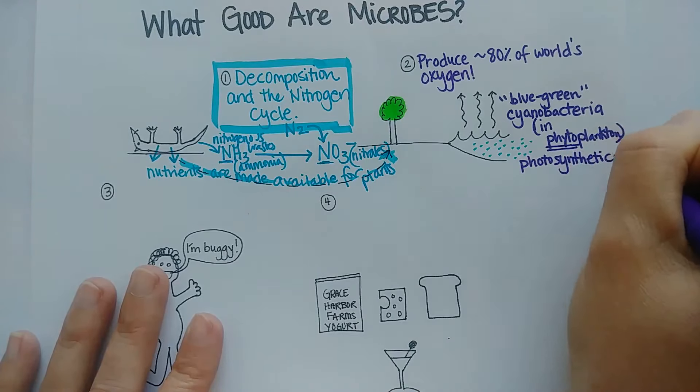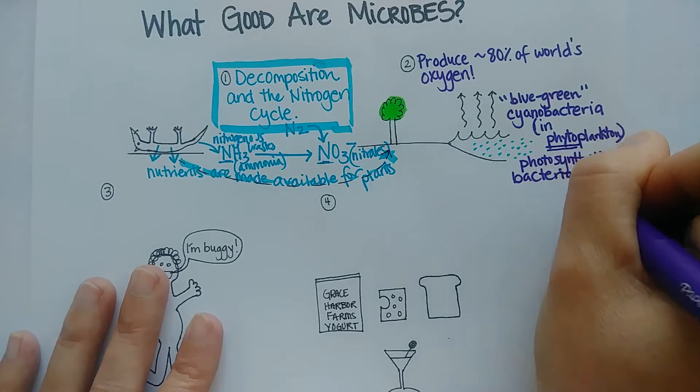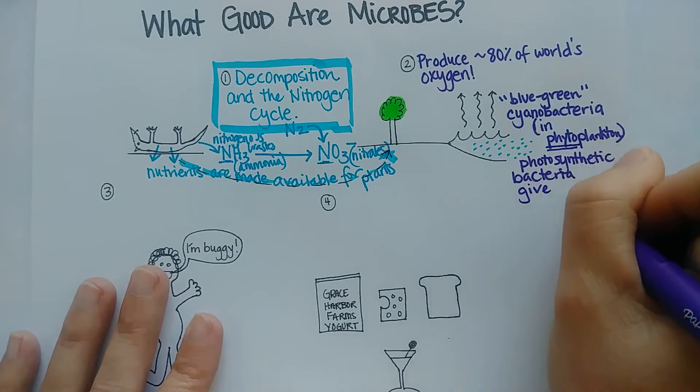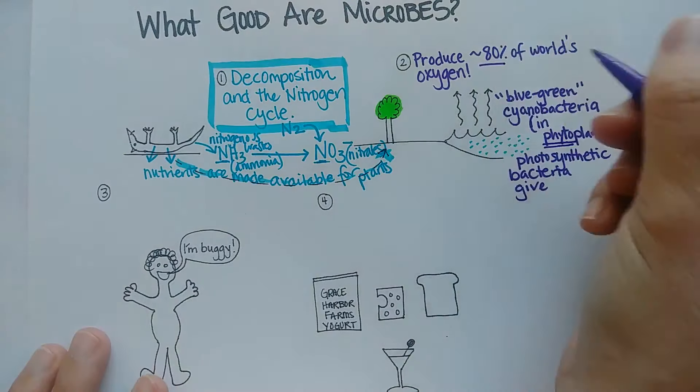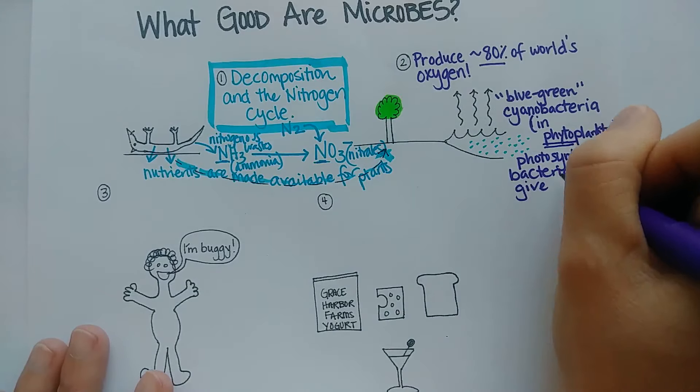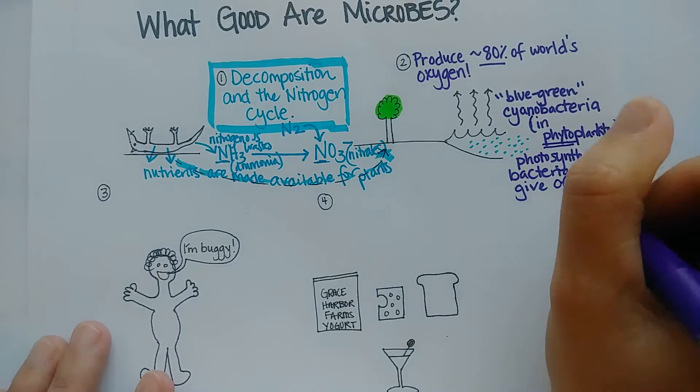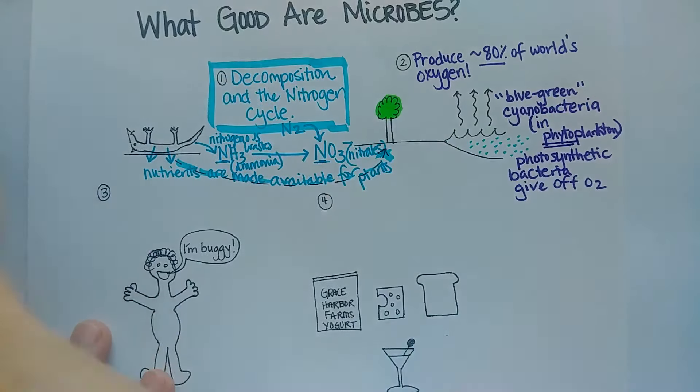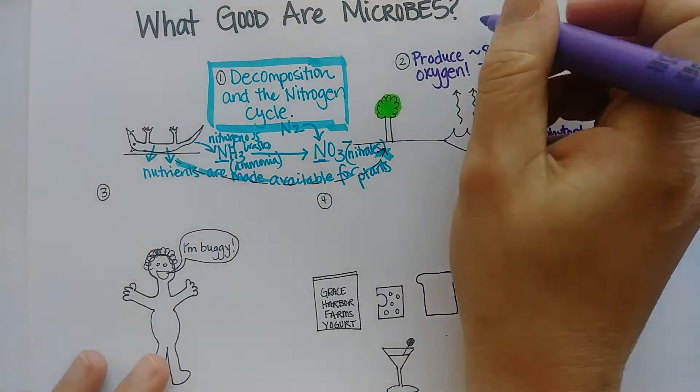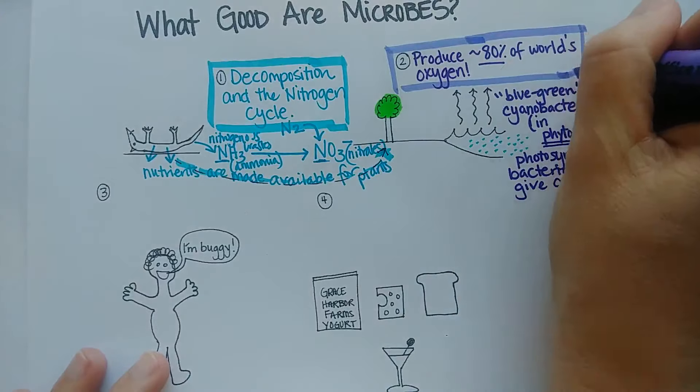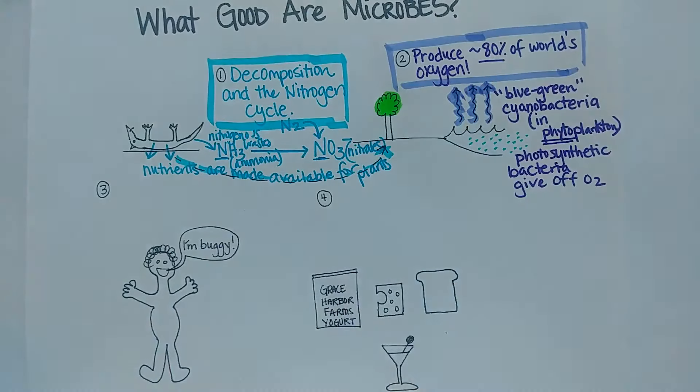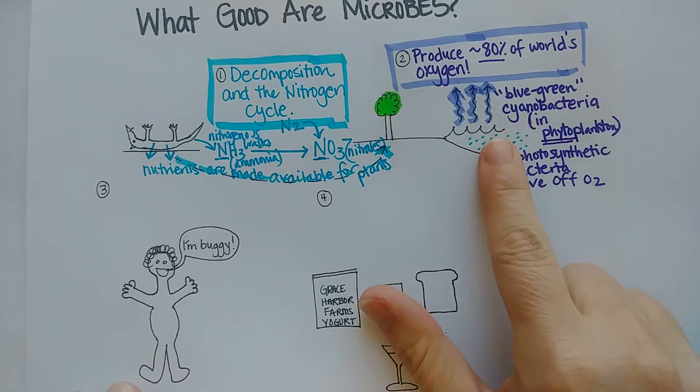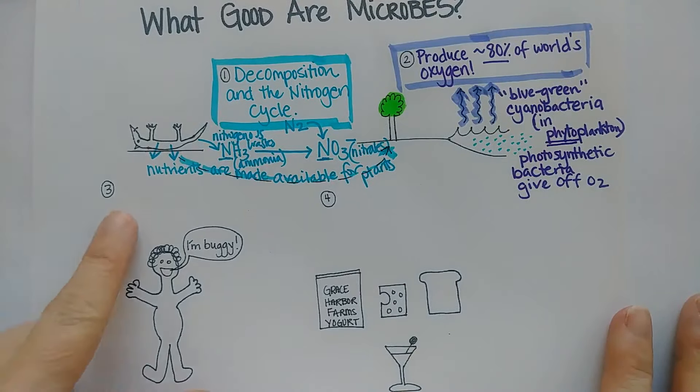These photosynthetic bacteria give off oxygen just like plants do. It's just that there are so many of these bacteria that they give off most of the world's oxygen. So photosynthetic bacteria give off oxygen. The phytoplankton are in the oceans, so this is talking about the ocean here.